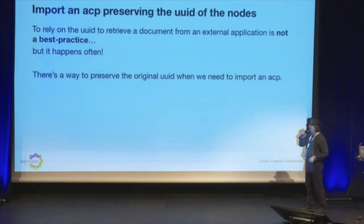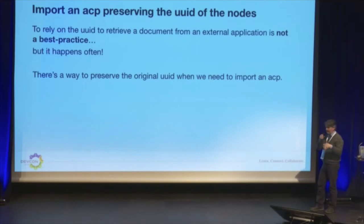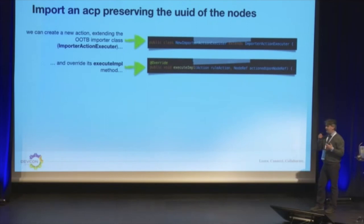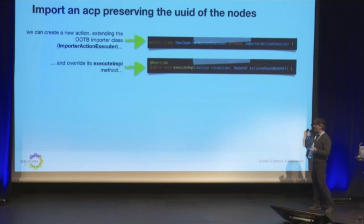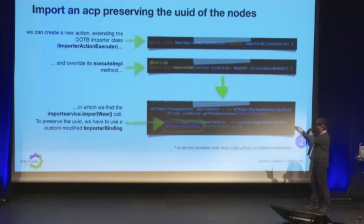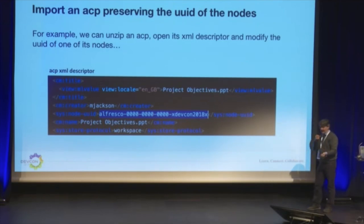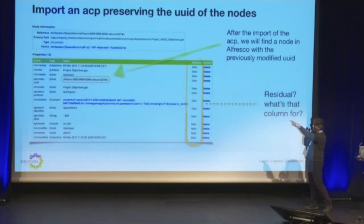You probably didn't know that: to rely on the UUID to retrieve a document from an external application is not a best practice, but it happens often. There's a way to preserve the original UUID when you import during a migration, when you import an ACP. All you need is to create a new action extending the out-of-the-box import action executor, and overwrite the execute implementation method, in which we find the important part — the import view call. In the import view call, we need to use the proper import binding properties. The code is on Gist. For example, I can unzip an ACP, change the UUID of a node in the XML descriptor, and after importing the ACP, find a node in Alfresco with the modified UUID.